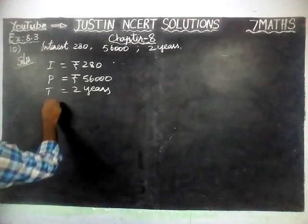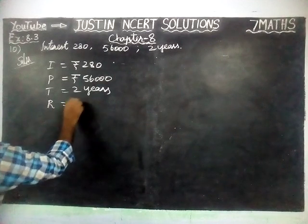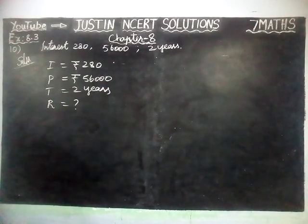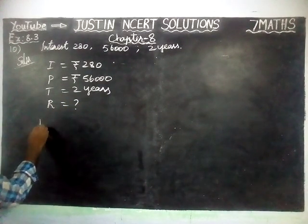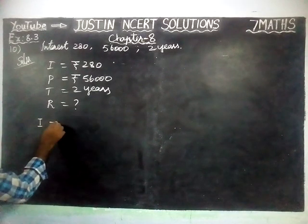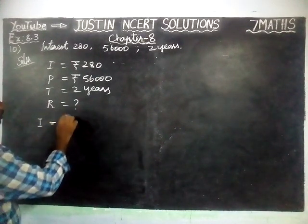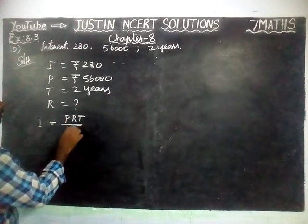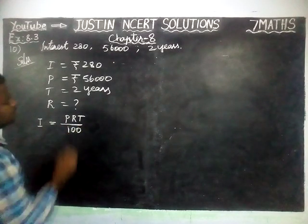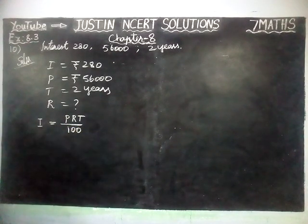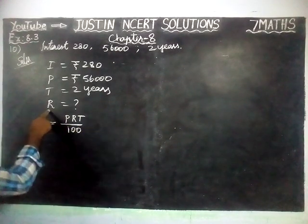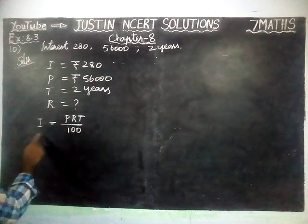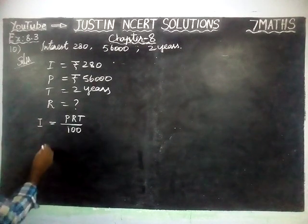We have to find the rate of interest. Now we know that the interest formula is: Interest = (P × R × T) / 100. We have to find the rate of interest, so we are going to interchange and rewrite it.